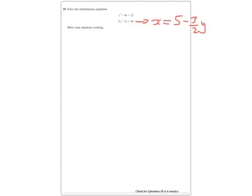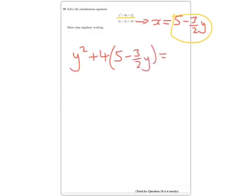Now I'm going to substitute this here into this equation here. So we're going to get y squared plus 4 lots of 5 minus 3 over 2 y equals 12. So all I've done is because this says that x equals this, wherever I've seen x in that equation, I've swapped what I've got there, what I've rearranged.